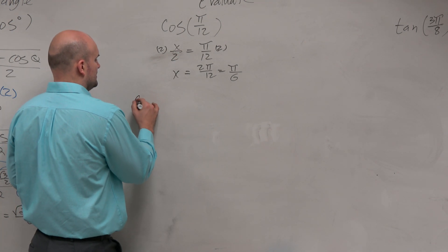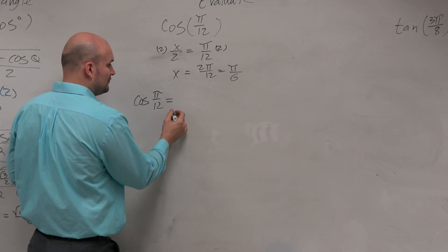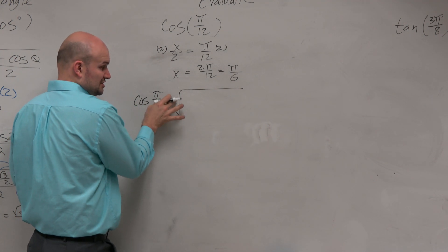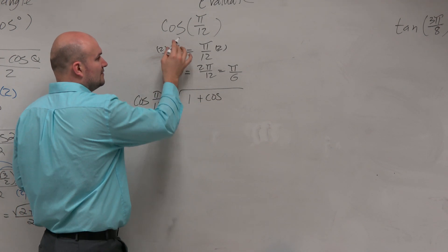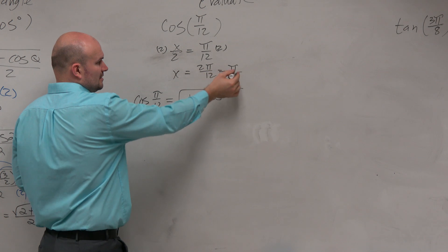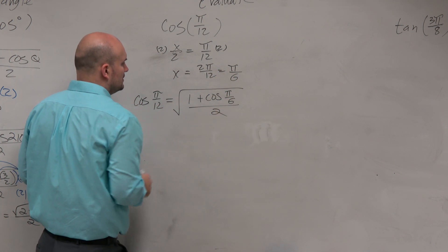So I can say the cosine of π over 12, again using my half angle formula, I'm going to use positive because it's in the first quadrant. And that's 1 plus the cosine of x, in this case π over 6, divided by 2.